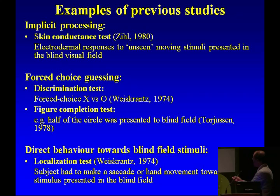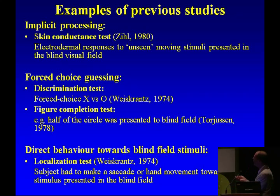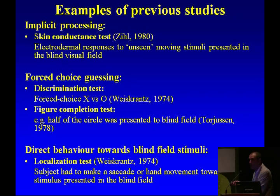Several studies came up after that with implicit processing. There were skin conductance tests — from responses to stimuli presented in the blind field, you could evoke electrodermal responses that were reported as unseen. In forced choice guessing, discrimination was possible between an X and a circle. There were also examples of figure completion, and tests of direct behavior such as localization tests, where you could present something in the blind part of the visual field and ask the subject to locate the stimuli — usually above chance.